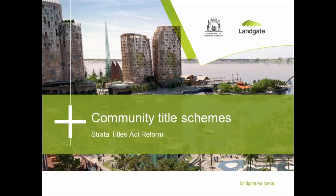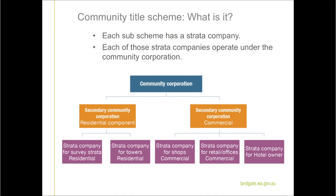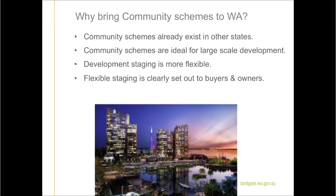The strata reforms will introduce a new form of strata known as community title schemes. A community title scheme involves multiple sub-schemes existing under an umbrella community scheme. Each sub-scheme has its own strata company, and each of those strata companies operate under an umbrella community corporation. Community schemes exist in other states including New South Wales and Queensland.